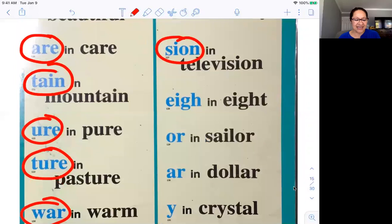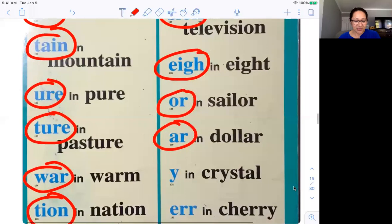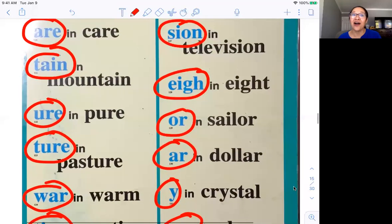A in eight, E-I-G-H. Or in sailor, O-R. Ar in dollar, A-R. Y in crystal, Y. Err in cherry, E-R-R. You got it, guys. Very good.